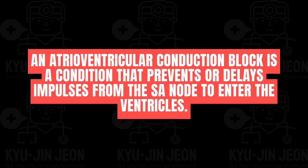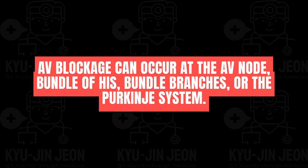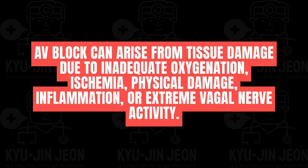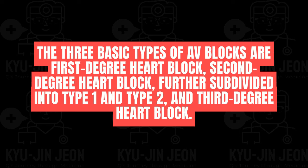An atrioventricular conduction block prevents or delays impulses from the SA node from entering the ventricles. AV blockage can occur at the AV node, bundle of His, bundle branches, or the Purkinje system. It can arise from tissue damage due to inadequate oxygenation, ischemia, physical damage, inflammation, or extreme vagal nerve activity. The three basic types are first-degree, second-degree (subdivided into type 1 and type 2), and third-degree heart block.